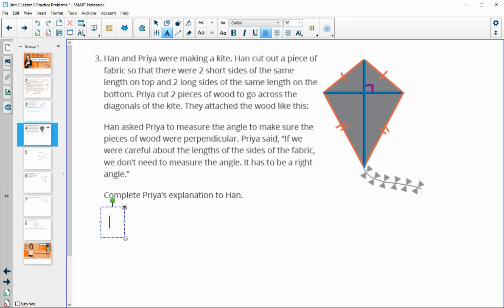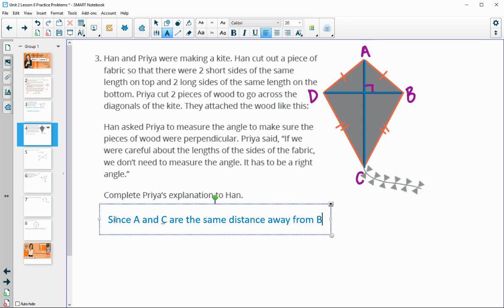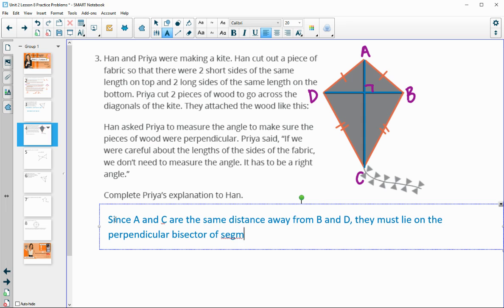And so I'm going to put some letters on here so that we can more easily describe this. So if I look at this and I put A, B, C, D here. Okay, then we'll go ahead and type out this explanation. Since A and C are the same distance or equidistant away from B and D, they must lie on the perpendicular bisector of segment BD. And so therefore, AC must be perpendicular to BD.